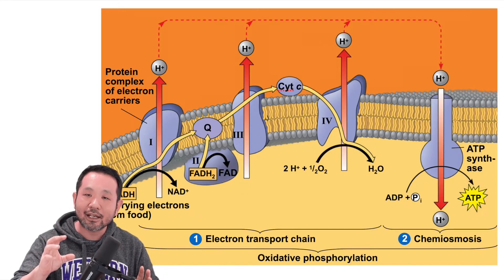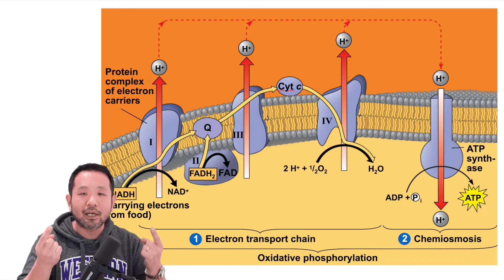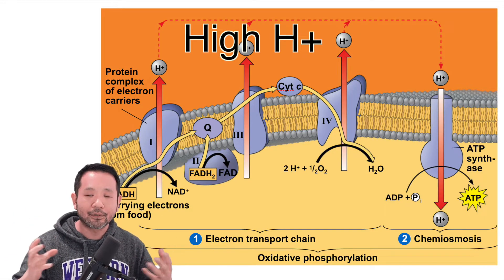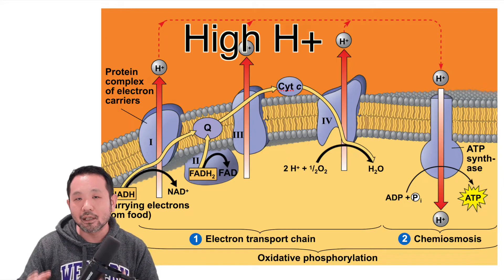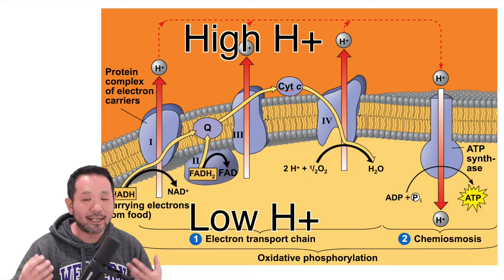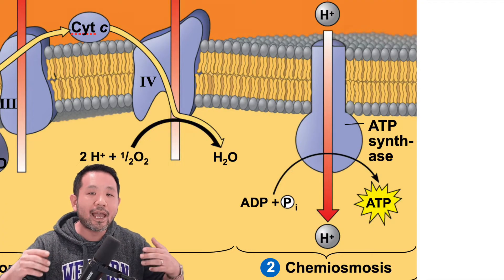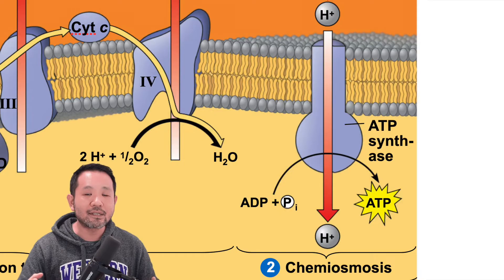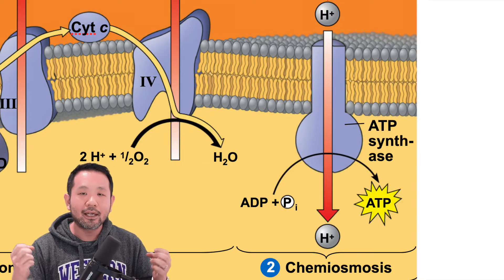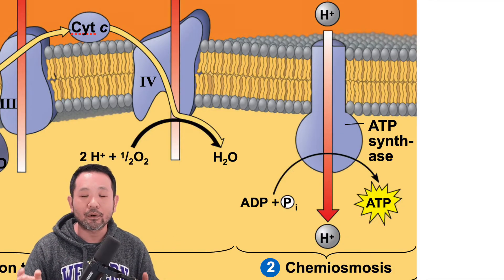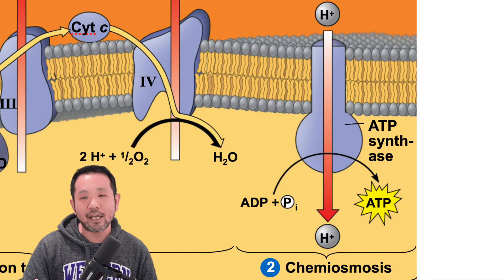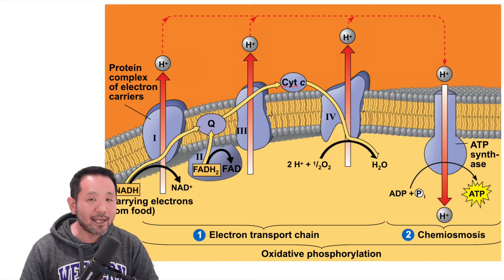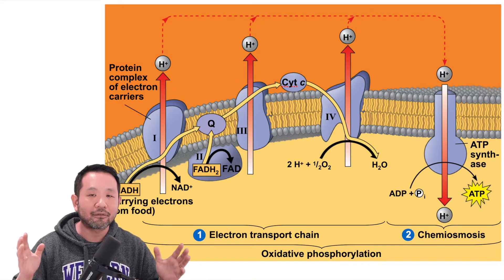These electrons are slowly losing energy, which is being utilized to pump protons into the intermembrane space. In the intermembrane space we have a high proton concentration, whereas the matrix has a relatively low concentration of protons. Those protons want to come back in, and as they come back in through the ATP synthase, they utilize the rotor within the ATP synthase protein to physically and chemically alter ADP and phosphate, turning it into adenosine triphosphate or ATP. From those 10 NADH and 2 FADH2, all the electrons pumping those protons will ultimately result in somewhere between 26 to 28 ATPs produced through oxidative phosphorylation.